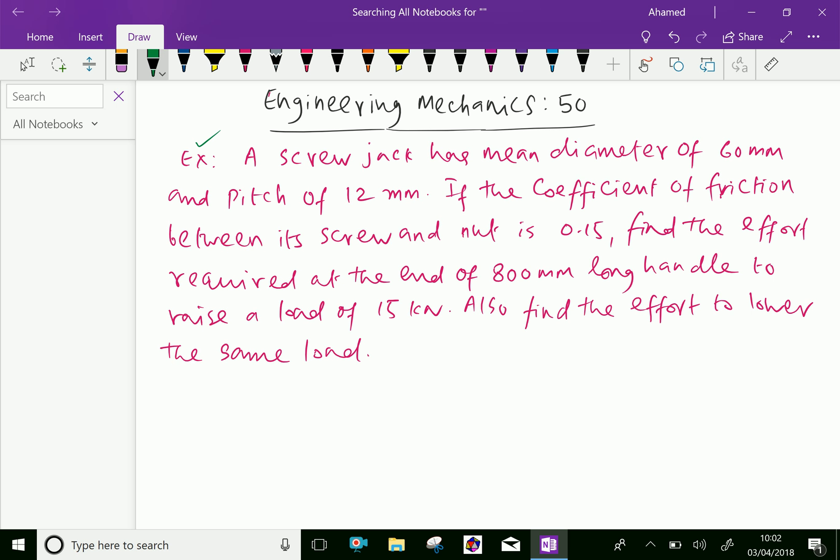Example: a screw jack has mean diameter of 60 mm and pitch of 12 mm. If the coefficient of friction between its screw and nut is 0.15, find the effort required at the end of 800 mm long handle to raise a load of 15 kN.